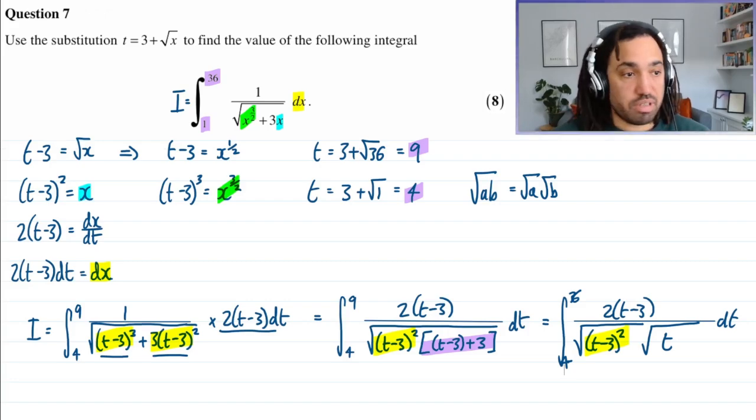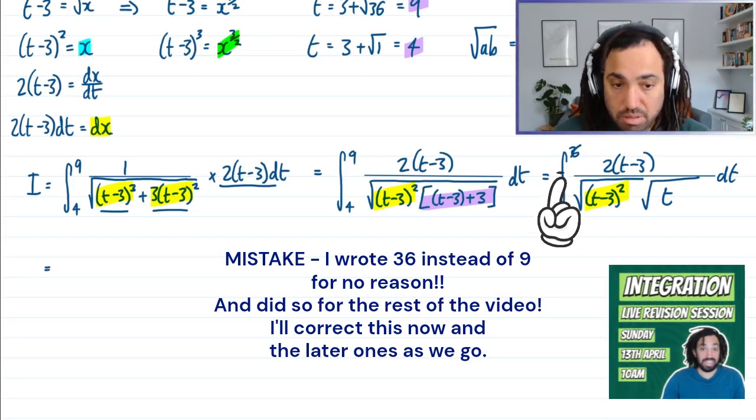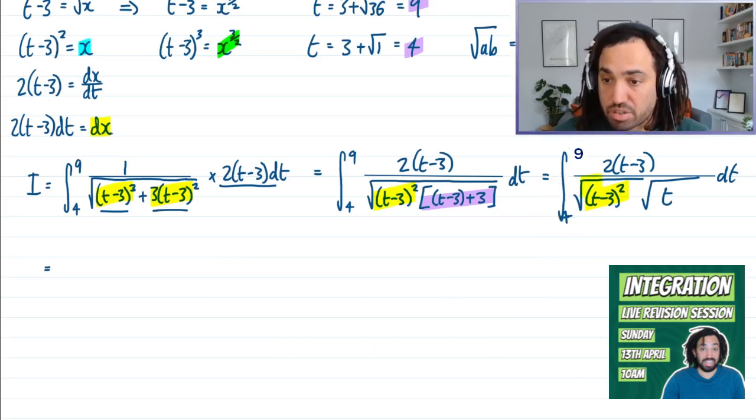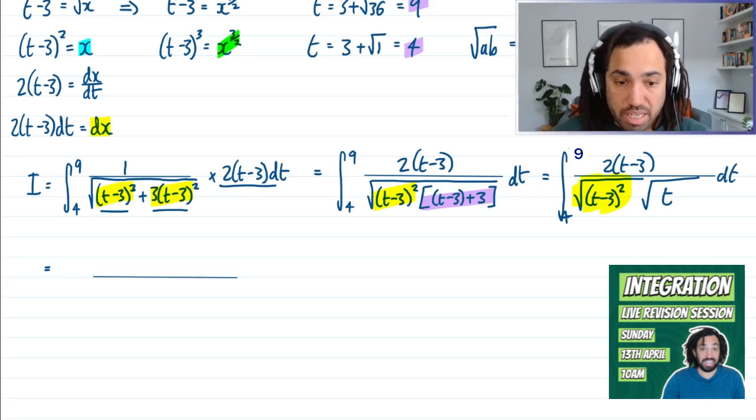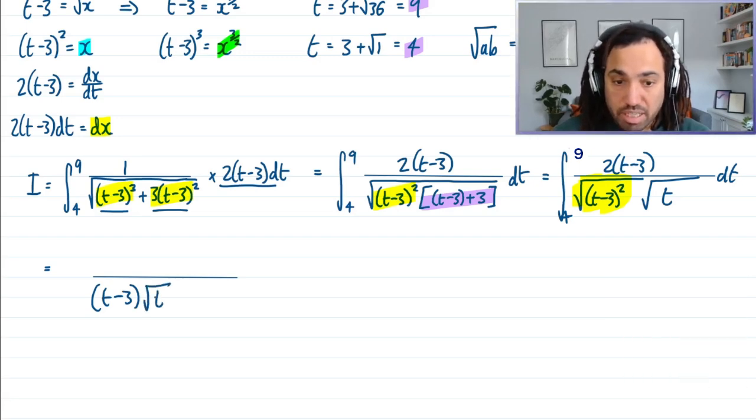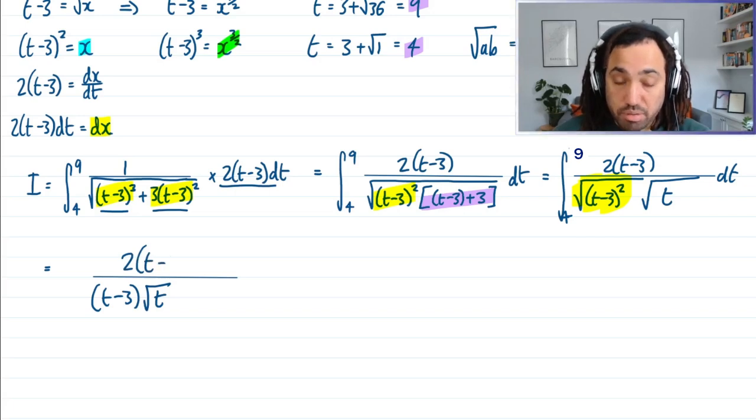Okay, let's just scroll down to get some more space. And now we can, well this, this yellow bit here is the square root of a square. So the square root of the square will cancel. So on the bottom there we just have t minus 3. And then we have root t. And that's over t, 2, t minus 3, dt.